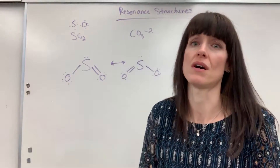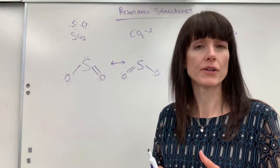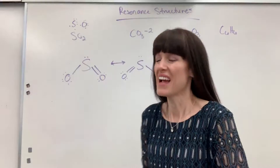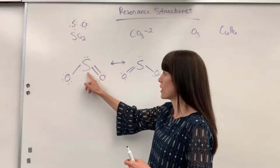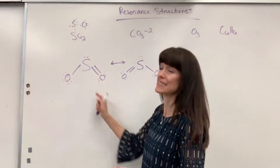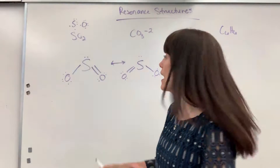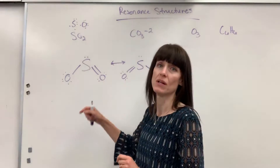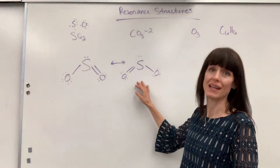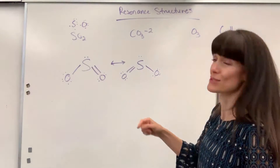So how do you know to draw a resonance structure? Here's a rule of thumb — it's not 100% perfect, but for first-year chemistry it will get you through: if your central atom has identical substituent atoms but different bonds — for example, sulfur has identical oxygens attached but one single and one double bond — that means you need to write a resonance structure showing the other possibility of how that molecule exists in nature.